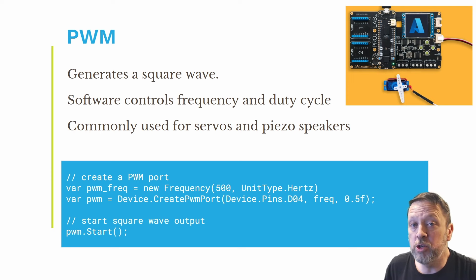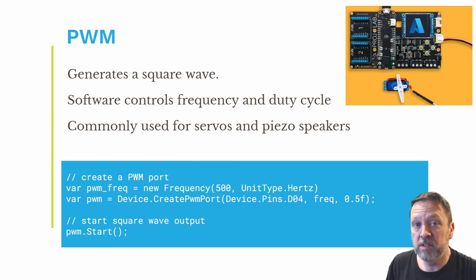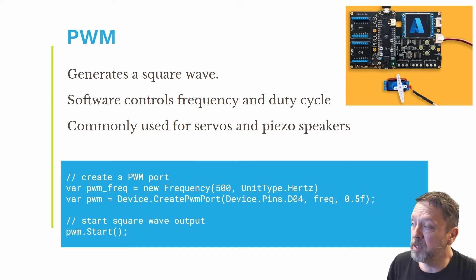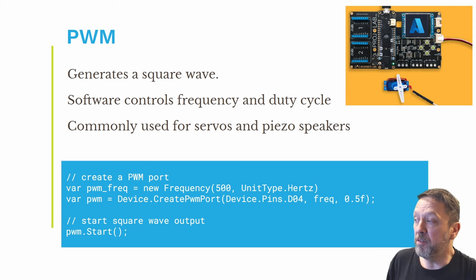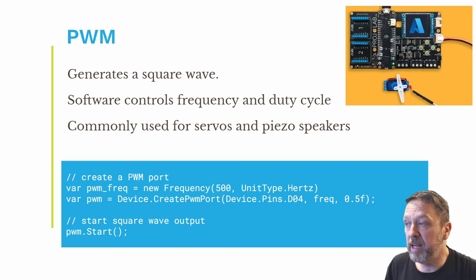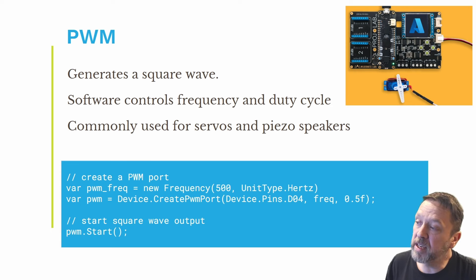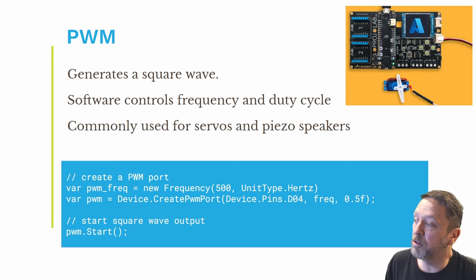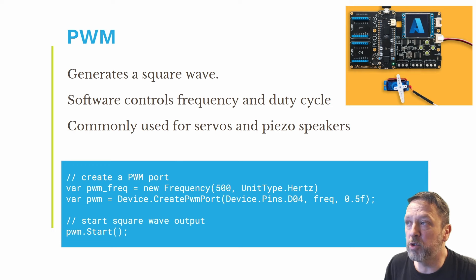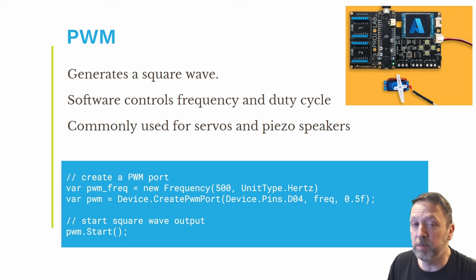PWMs generate a square wave. All you have to do is create a PWM port, giving it some options — the frequency you want to drive it at, and the duty cycle. In this case, 50% duty cycle at 500 hertz. These are really commonly used for driving things like piezo speakers and servos.